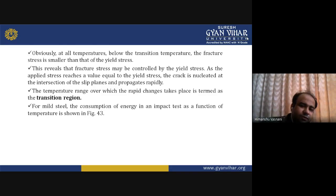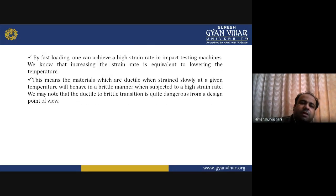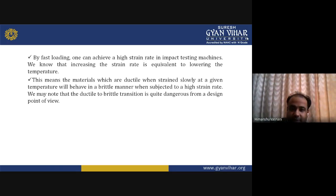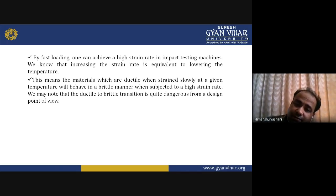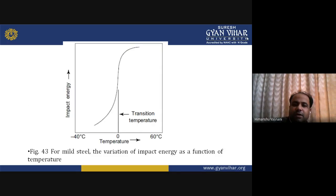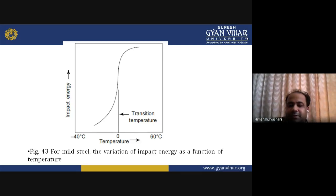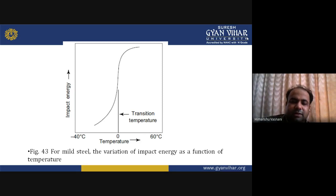For mild steel, the consumption of energy in an impact test as a function of temperature is shown. By fast loading one can achieve a strain rate in an impact testing machine. Increasing the strain rate is equivalent to lowering the temperature. Materials that are ductile when strained slowly at a given temperature will behave in a brittle manner when subjected to a high strain rate. The ductile to brittle transition is quite dangerous from a design point of view.